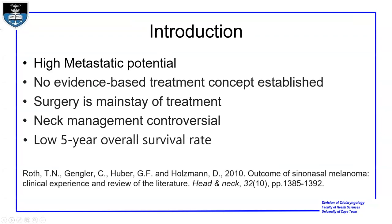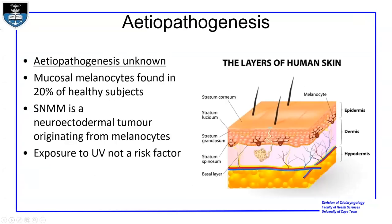There is a low five-year overall survival rate. The etiopathogenesis of sinonasal mucosal melanoma is not known. These mucosal melanoma sites are found in about 20% of healthy subjects. As a neuroectodermal tumor, that is expected, since that is where the melanocytes come from. Unlike cutaneous melanoma, exposure to ultraviolet radiation is not suspected as a cause, because of the anatomical location in the nasal and paranasal sinuses.